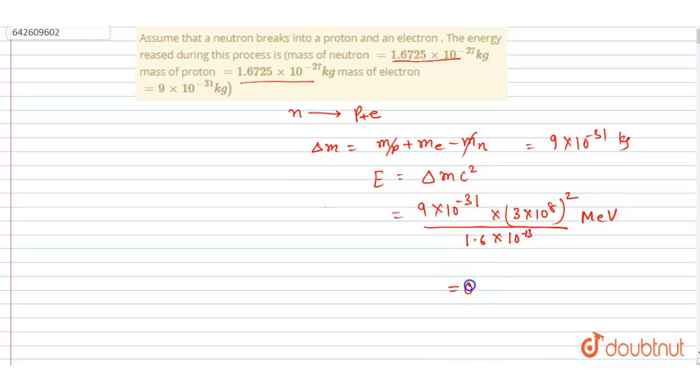You will get 0.506 mega electron volt as the answer. This will be the amount of energy released when the neutron breaks into proton and electron. Simple, thank you.